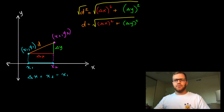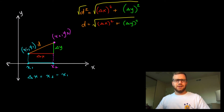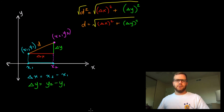Similarly, we can do the same thing with our Y values. The vertical distance between these two points corresponds to the difference of our Y coordinates, so Delta Y equals Y₂ minus Y₁.